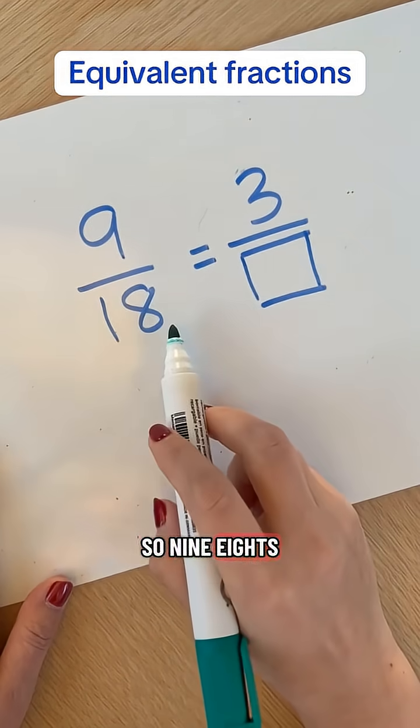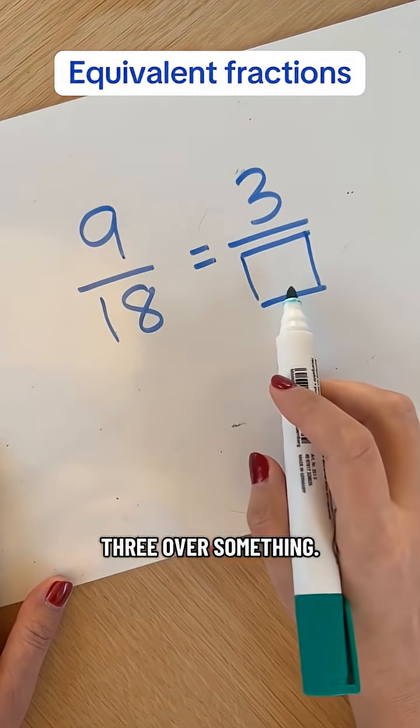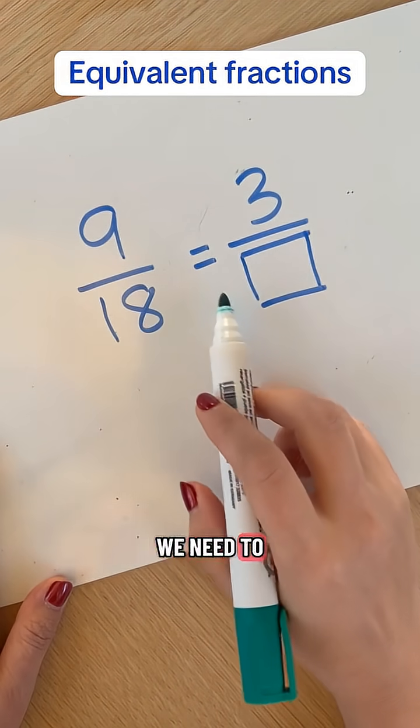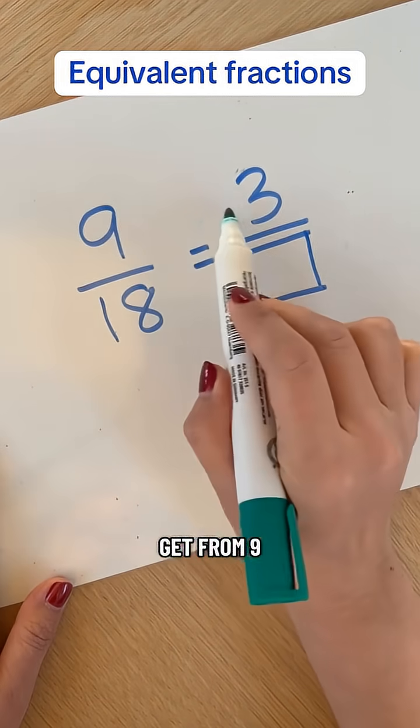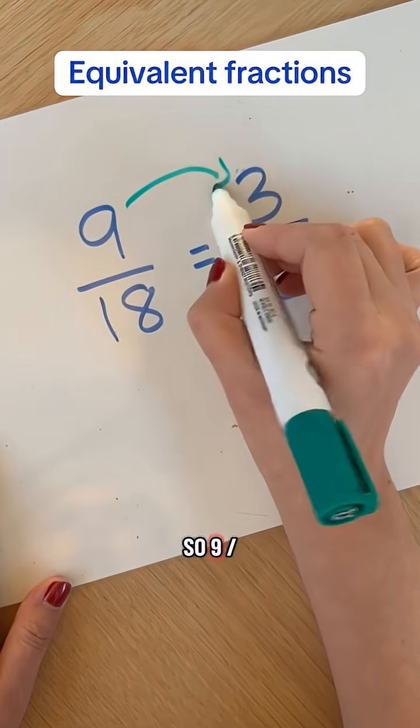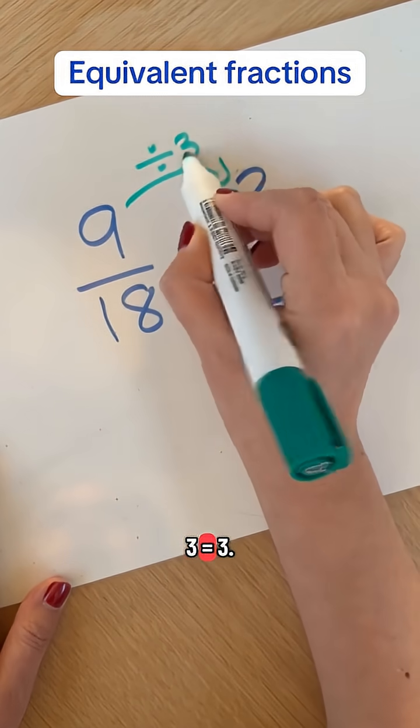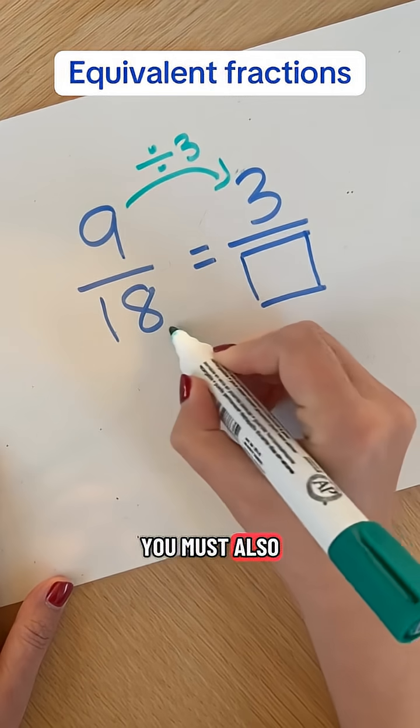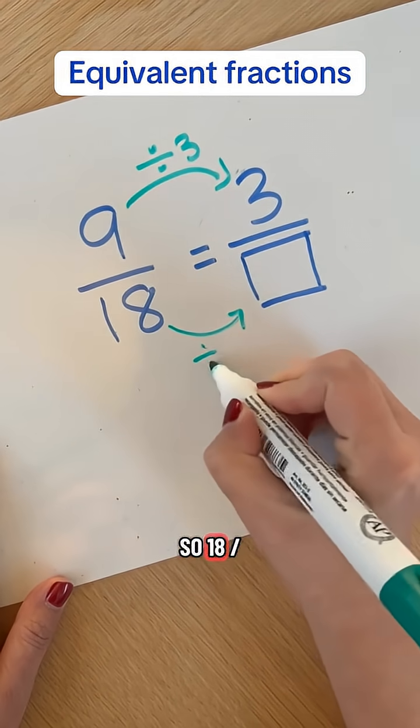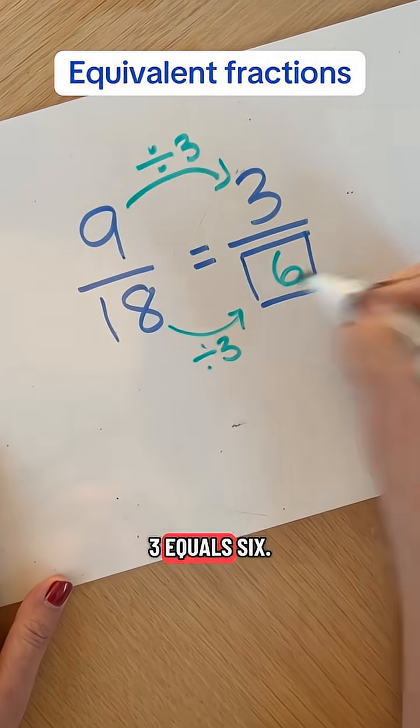So 9 eighths is equivalent to 3 over something. In this example, we want to find out what we need to divide by to get from 9 to 3. So 9 divided by 3 equals 3. And whatever you do to the top, you must also do to the bottom. So 18 divided by 3 equals 6.